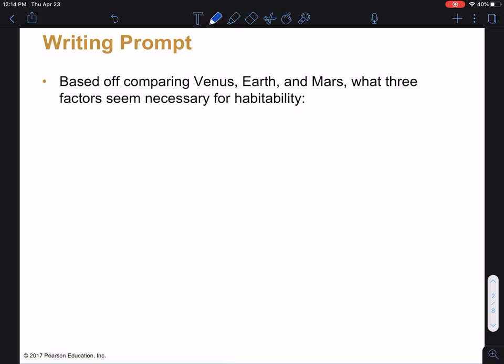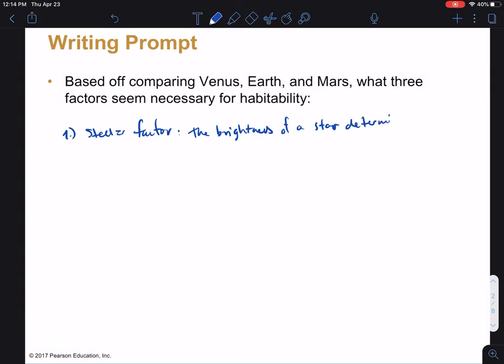All right, the first factor is what we will be calling the stellar factor. And this is relating to the star. Really, the brightness of the star determines where the habitability zone is. So it depends on, it will determine how far out it is, it will determine how thick it is, that is, how wide it is. And if your planet is located in that region, that's sort of the first criteria we have to meet in order to have a habitable world.